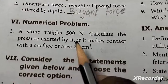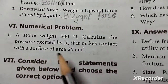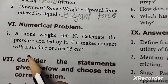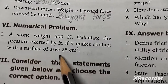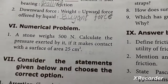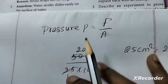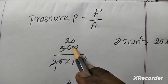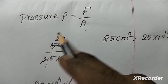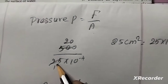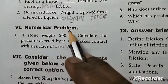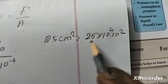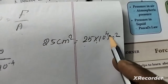Section six: Numerical problem. A stone weighs 500 Newtons. Calculate the pressure exerted by it if it makes contact with the surface of area 25 cm². Pressure formula: P = F/A. Substituting: 500 divided by 25 cm² (converted to m²).